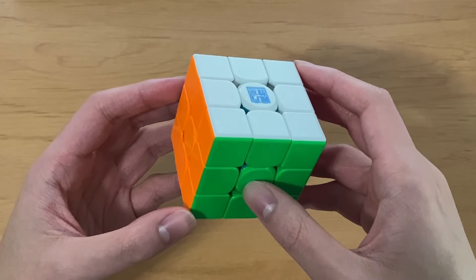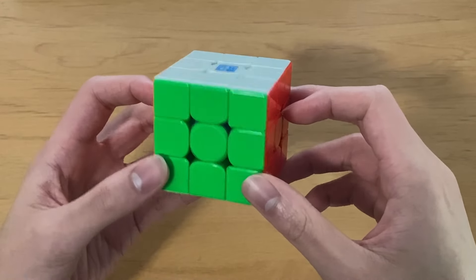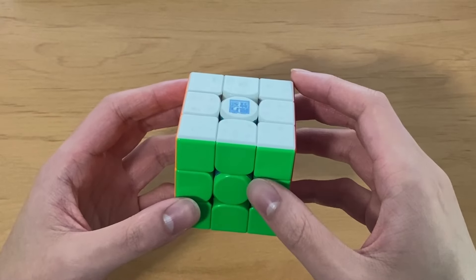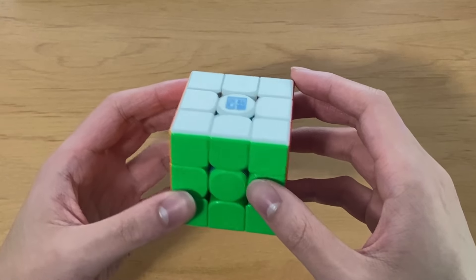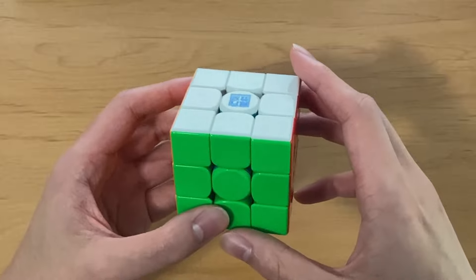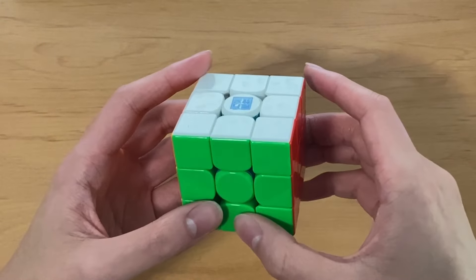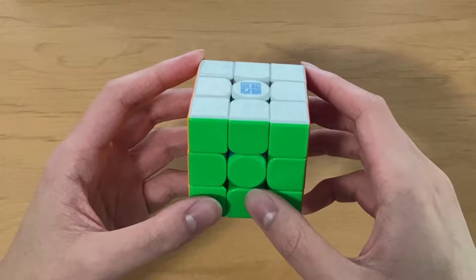The performance of both the maglev version and the spring version is really good. I tend to like Moyu cubes and their turning feel, and I think the RS3M V5 has one of the best performances out of any Moyu cube. It's also only $25 for the ball core UV version, which is super nice, and if you want to spring mod it, it's only like a few dollars extra.